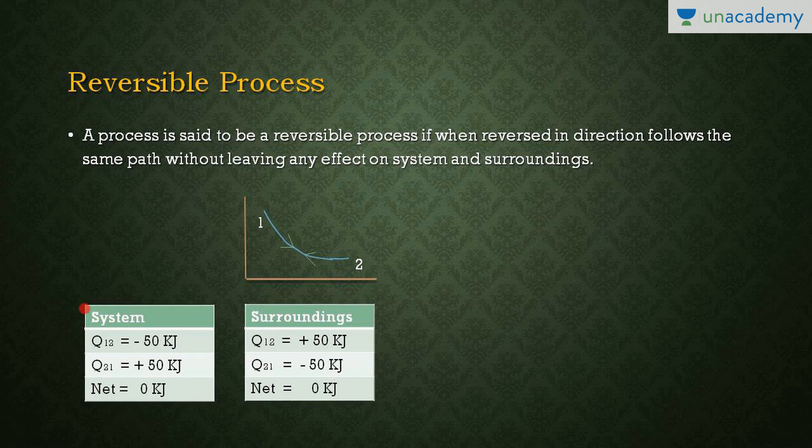So the net heat effect on the system is zero kilojoules — from going 1 to 2, heat is rejected from the system which is minus 50 kilojoules, and going from 2 to 1, heat is added to the system which is plus 50 kilojoules. So the net heat is zero. This is a reversible process, which follows the same path — the path is the same from 1 to 2 and 2 to 1 — without leaving any effect.